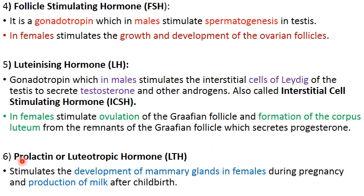The last hormone of the anterior pituitary is prolactin, also called luteotropic hormone (LTH). In females, it stimulates the development of the mammary glands during pregnancy and the production of milk after the birth of the child.